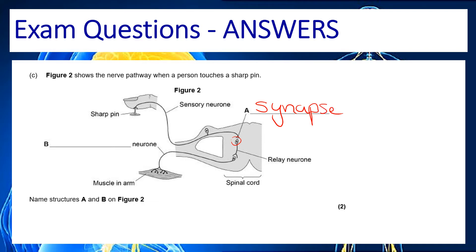If we look at B it's looking at this neuron coming here towards the muscle and we know that muscles move so this must be the motor neuron. Remember the word motor means movement.